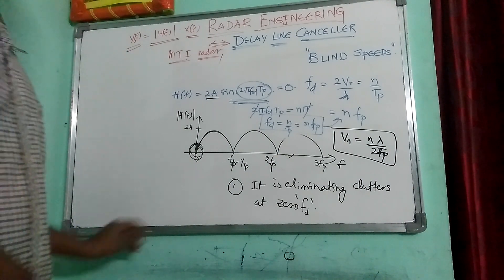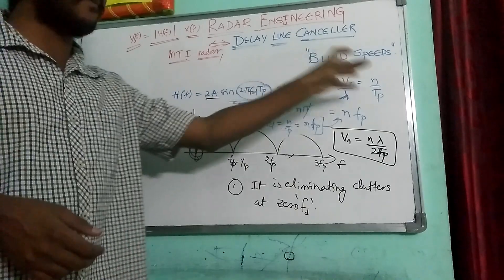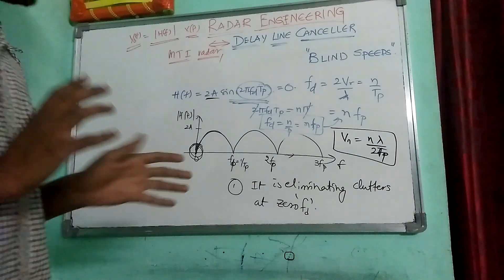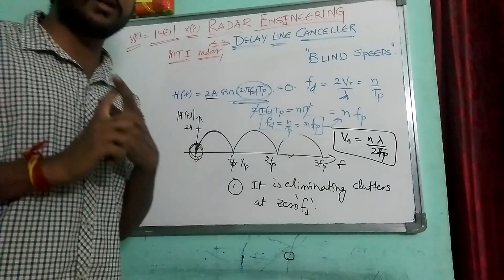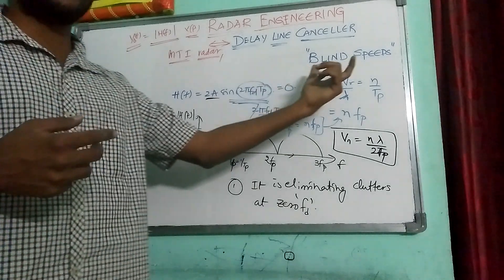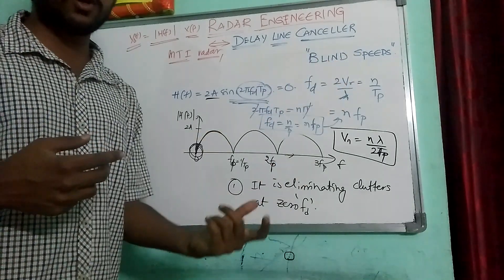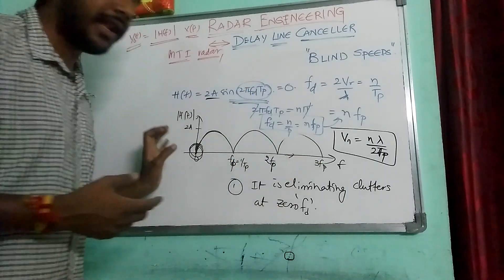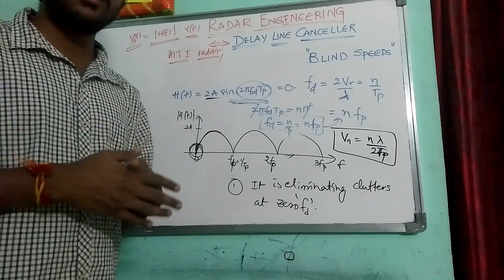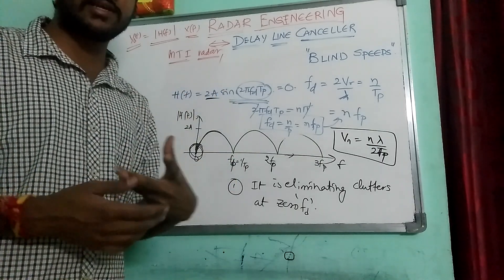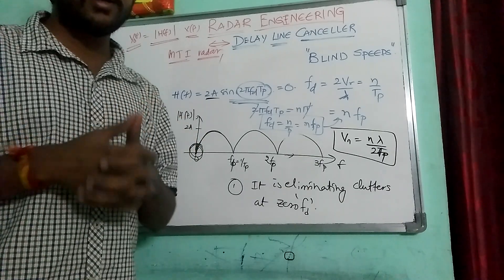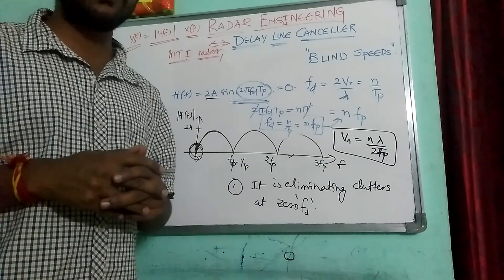So the delay line canceler introduces a concept called blind speeds, at which the response of the system becomes zero. It is effective at eliminating clutters at zero frequency, but it is not so effective in eliminating the blind speeds — blind speeds remain a problem when using a single delay line canceler. This delay line canceler can also be operated as a double delay line canceler, meaning two delay line cancelers are cascaded. That's it for the video — if you like it, share it and subscribe to the channel. Thank you.